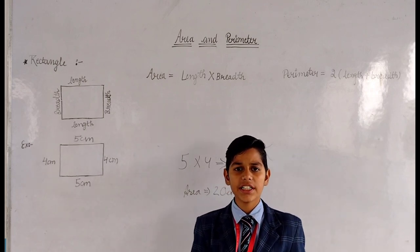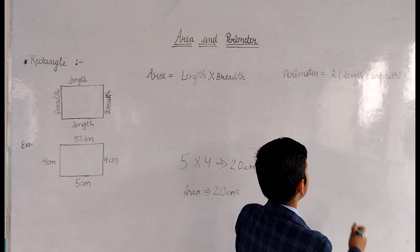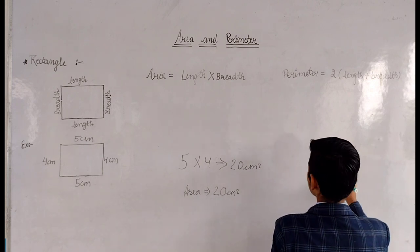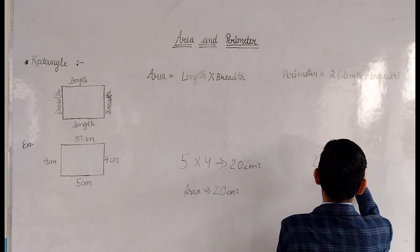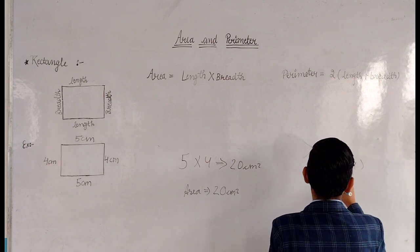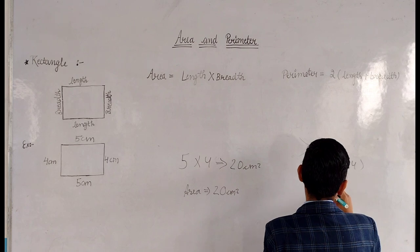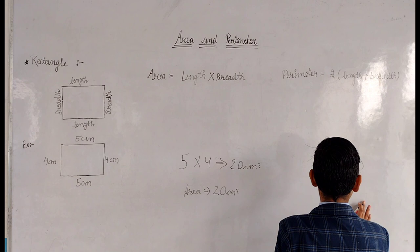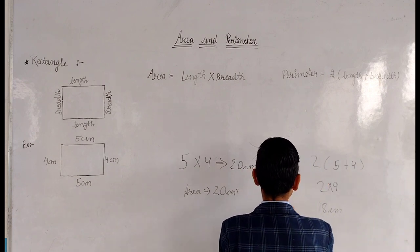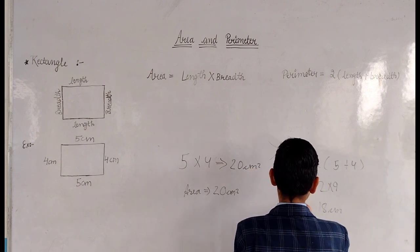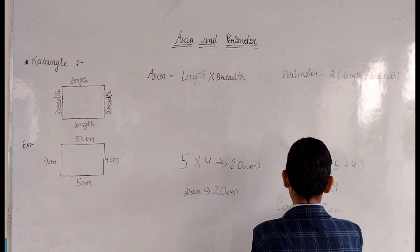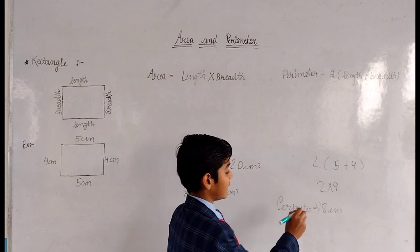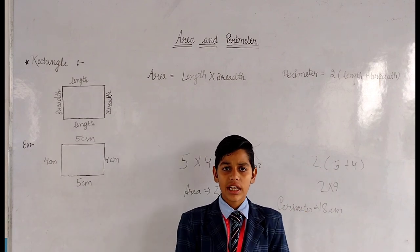Now we will find the perimeter of the rectangle. The formula is 2 × (length + breadth). Length is 5 cm and breadth is 4 cm. So 5 + 4 = 9, and 2 × 9 = 18. The perimeter is equal to 18 cm.